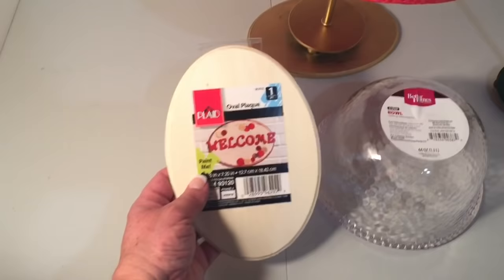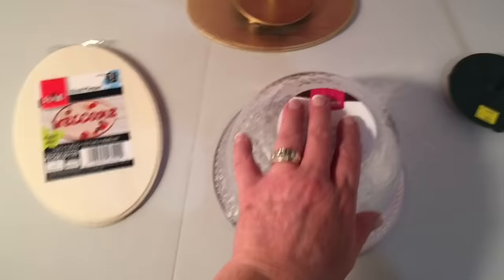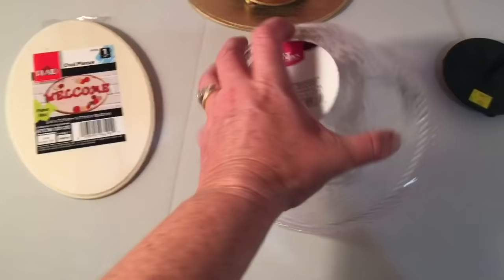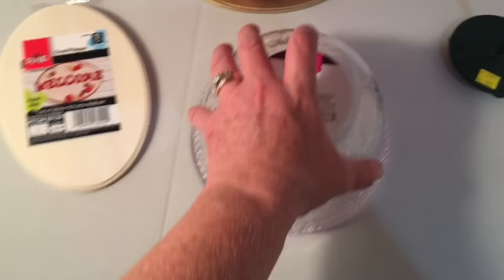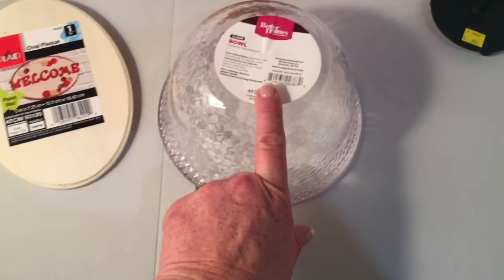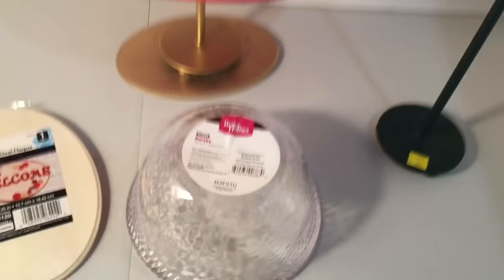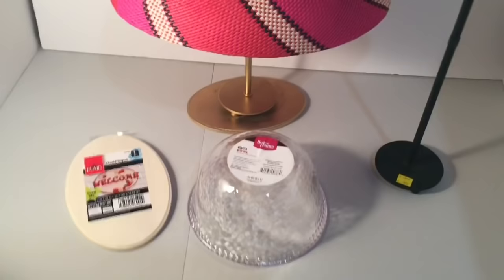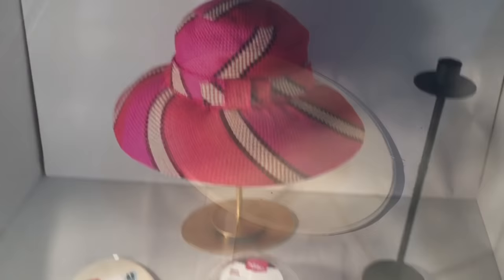The materials that I have here are this wood little base, and I purchased this at Walmart for about a dollar. I also purchased this clear bowl at Walmart by Better Homes for a dollar ninety-eight, and I bought this metal taper candle holder at Goodwill for 99 cents. So this project is going to cost me about five dollars to put together. Let's get started.